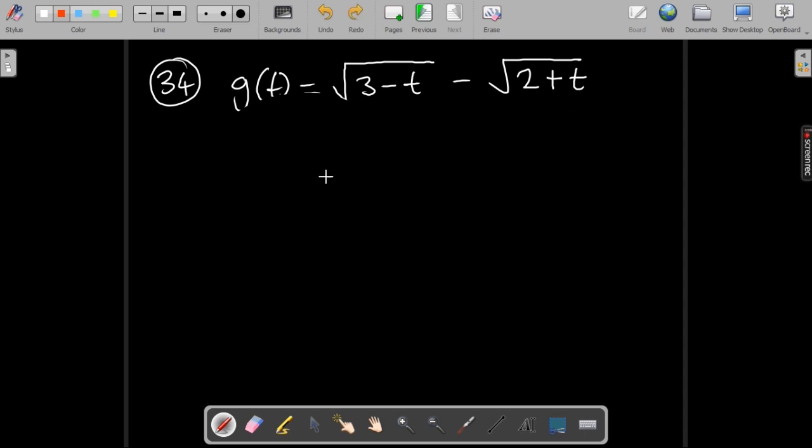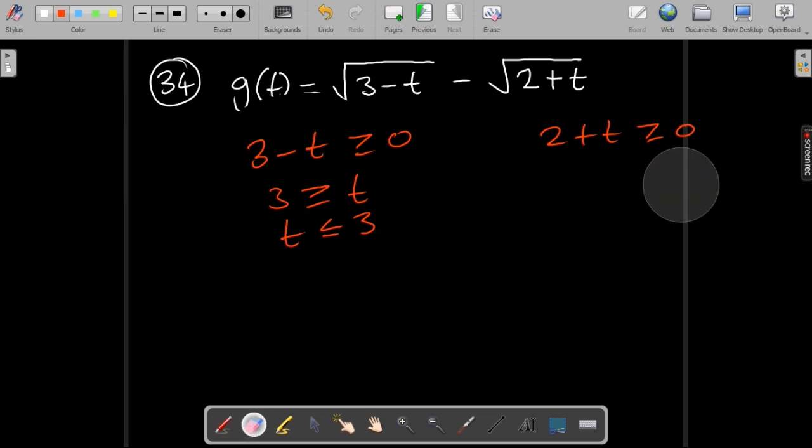To enforce that into our domain we're going to have 3 minus t greater equal to zero as well as 2 plus t greater equal to zero. If you solve this one we'll have 3 greater than or equal to t which means t less than or equal to 3. For this one we'll have 2 greater equal to minus t, or we can leave the t on this side and take the 2 to that side. So t greater than or equal to minus 2.